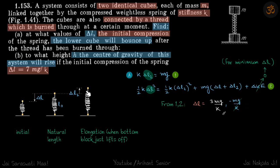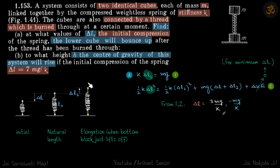Since the spring is compressed, δl must be positive, so our answer for part one is δl = 3mg/k. For part two, the given compression is δl = 7mg/k — much more than the minimum 3mg/k. So when the lower block just lifts off, the top particle will still have some velocity, and the whole system will continue rising. We need to find the height h the center of gravity rises.